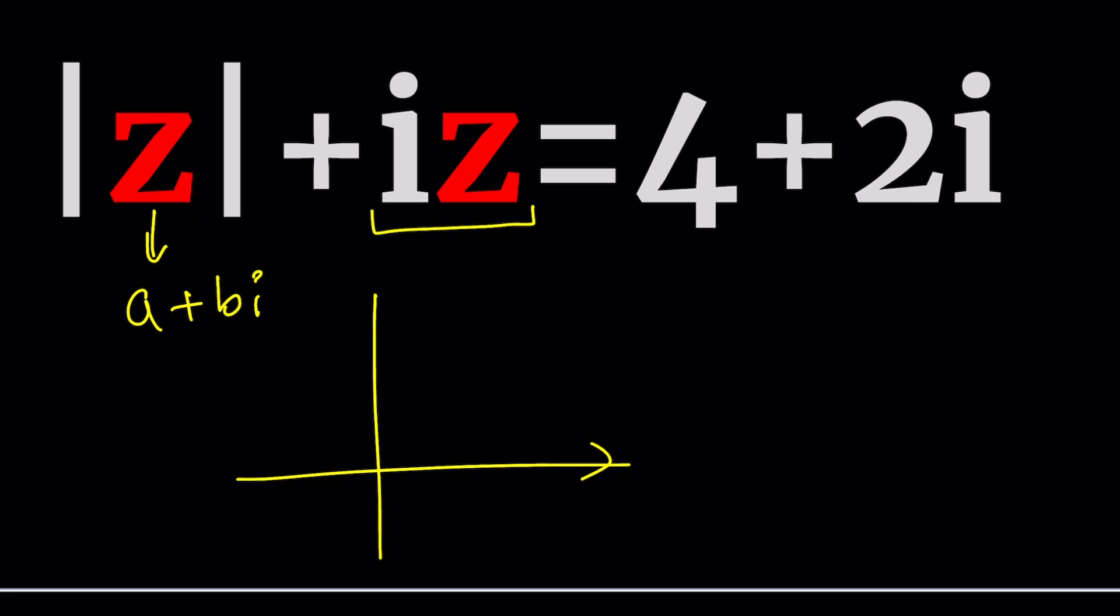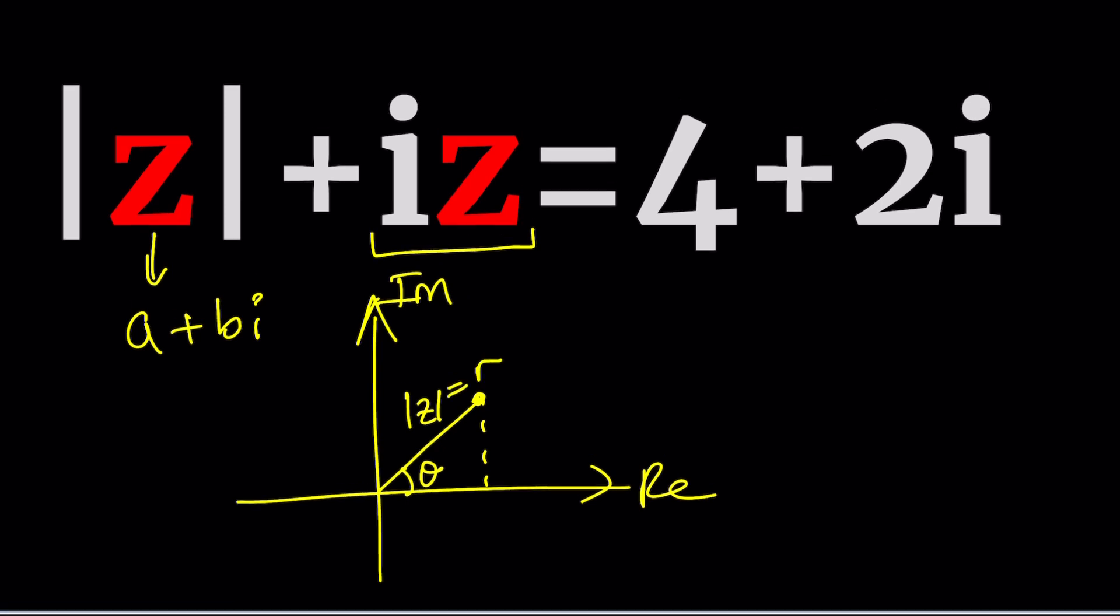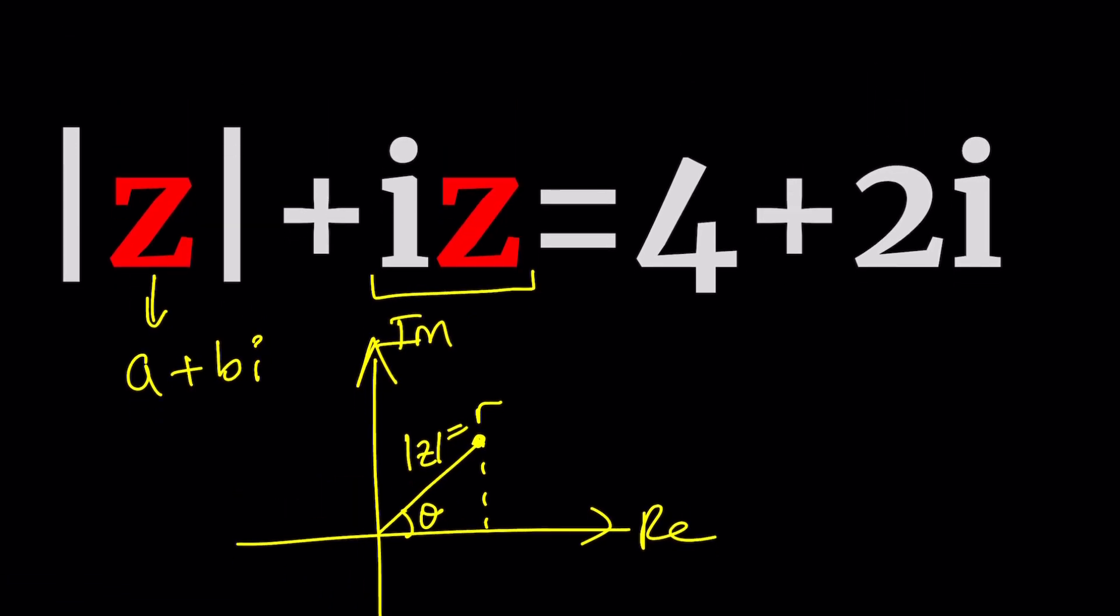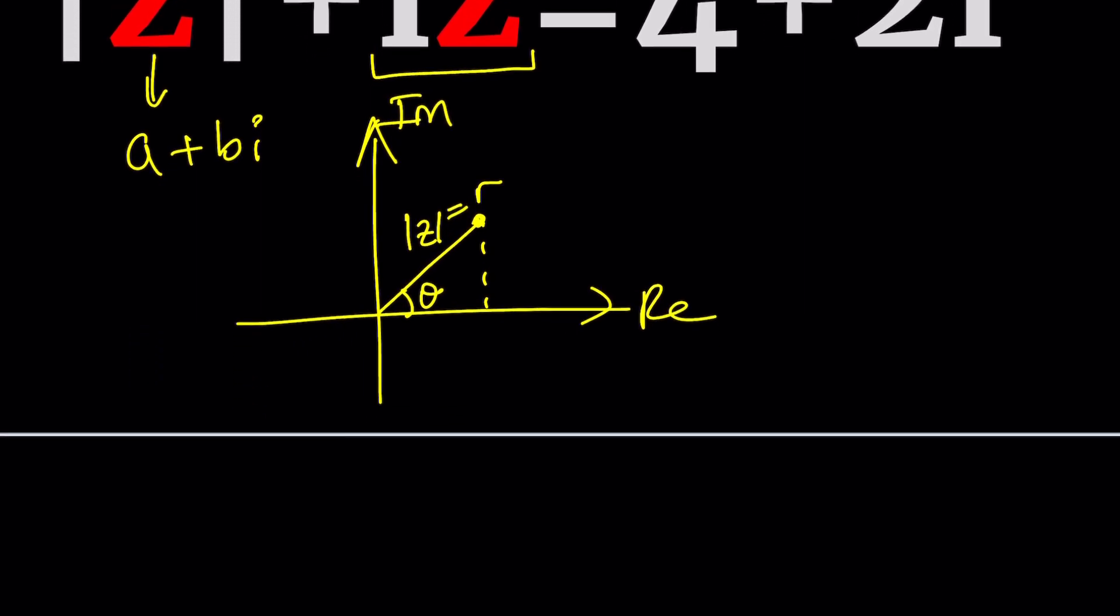Absolute value, real quick. I just want to talk about plotting a complex number in the plane which is called the argand plane. If you connect it to the origin then you can talk about the absolute value which is the distance from zero, and it makes an angle which is theta, called the argument. This is called the modulus. There's a lot of things to learn about complex numbers, but don't worry you'll get it.